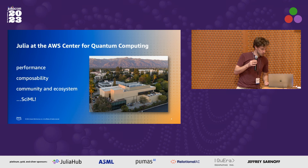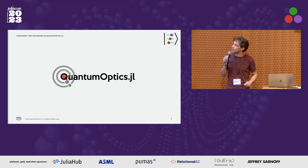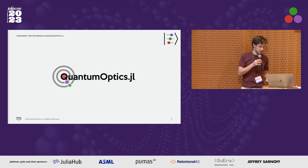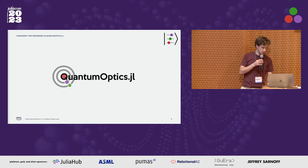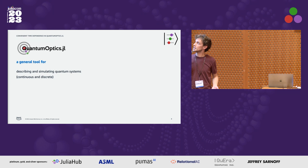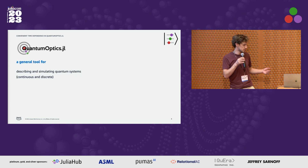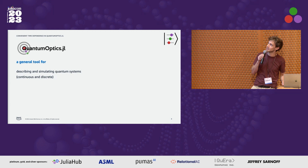So QuantumOptics.jl — what is it? It's a very general tool, originally developed by Helmut Ritsch's group at the University of Innsbruck in Austria. It's been around for a while now, but it's been growing and attracting new users and contributors recently. It's a general tool you can use to describe and simulate pretty general quantum systems, both discrete and continuous — discrete levels or continuous systems like light fields, oscillators, and everything in between.